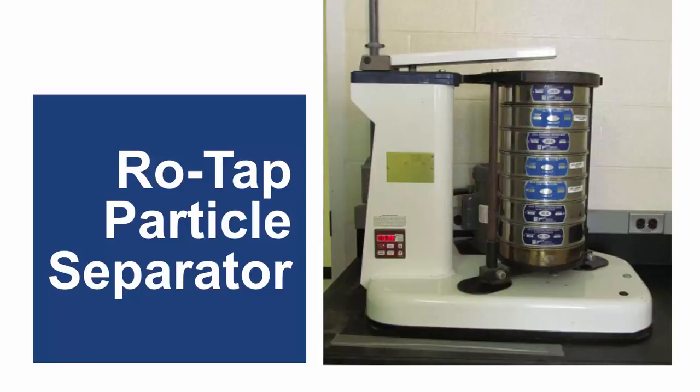Because the ROTAP uses vertical shaking and dried samples, its results are often very different from techniques like the Penn State and ASABE separators that use horizontal shaking and as-fed samples.